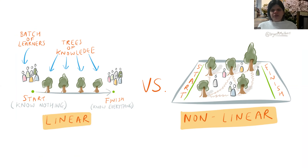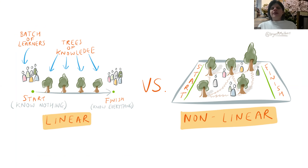I also view my classroom as non-linear. Many teachers view their classroom as linear — one line of students, one group. But in reality, there are different groups and different kinds of students. I always saw my class as 26 different individuals with different needs and different kinds of learners.